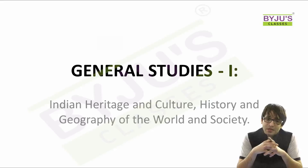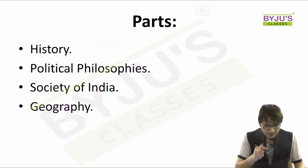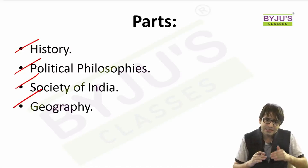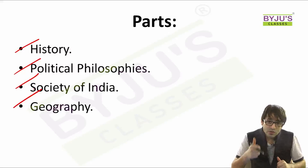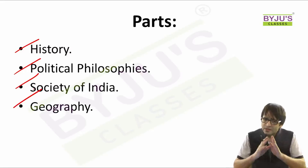If we divide the entire syllabus into broad areas, we will have four important parts: History, Political Philosophies, Society of India, and Geography. These are broad areas, so let us attempt at dissecting each of these areas so that we can come to an absolute picture — what to read, what not to read, how to read, and how to anticipate questions that might be asked in the civil services mains examination. Let us start with history.